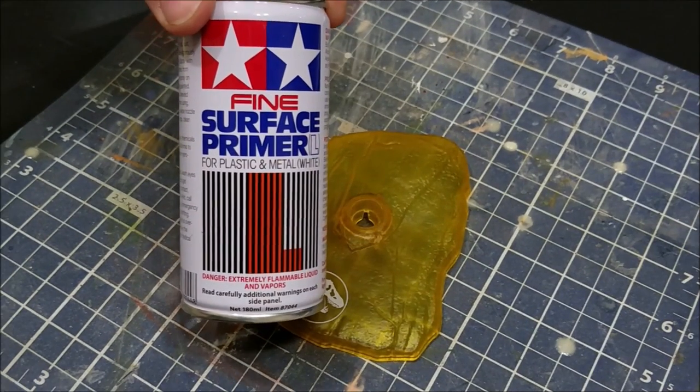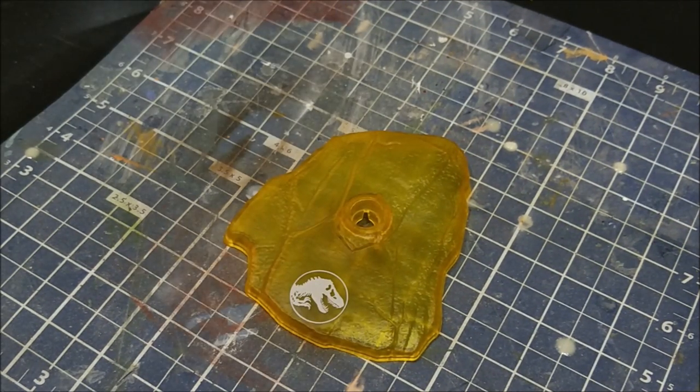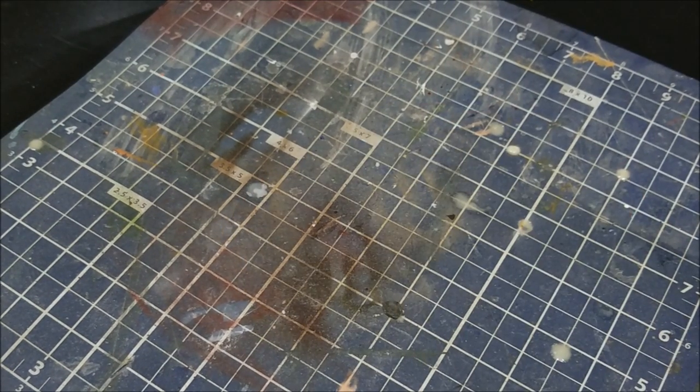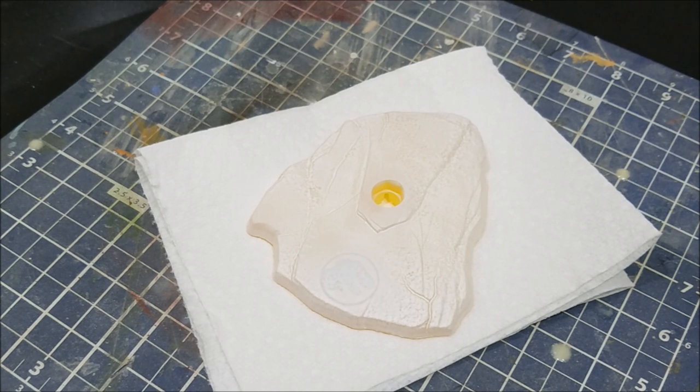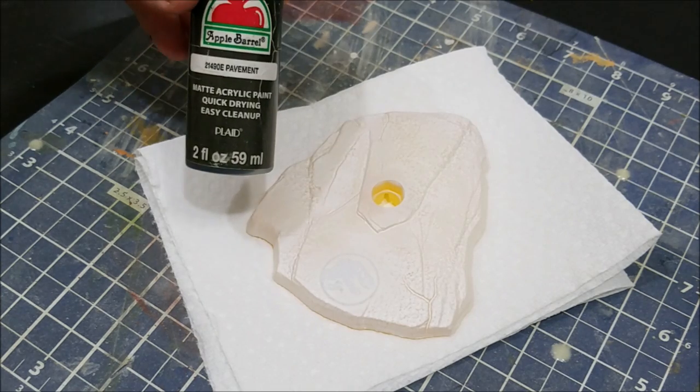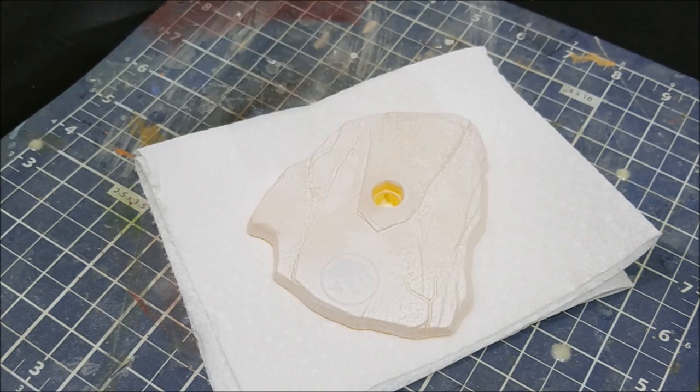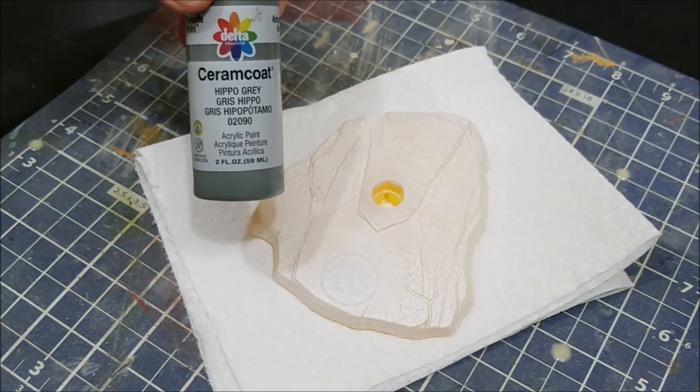Before we lay down any acrylic paint we need to prime these little bases first, and for that I'm using Tamiya Fine Surface Primer in white. For this base we're going to do a flat rock color using three acrylic paints: pavement, hippo gray, and granite gray.